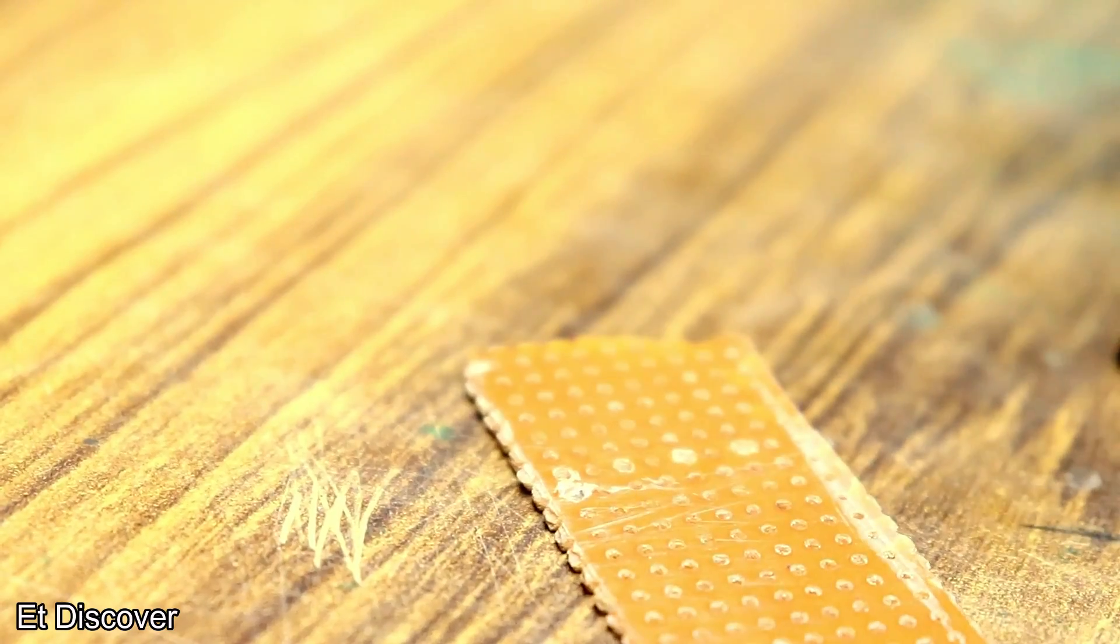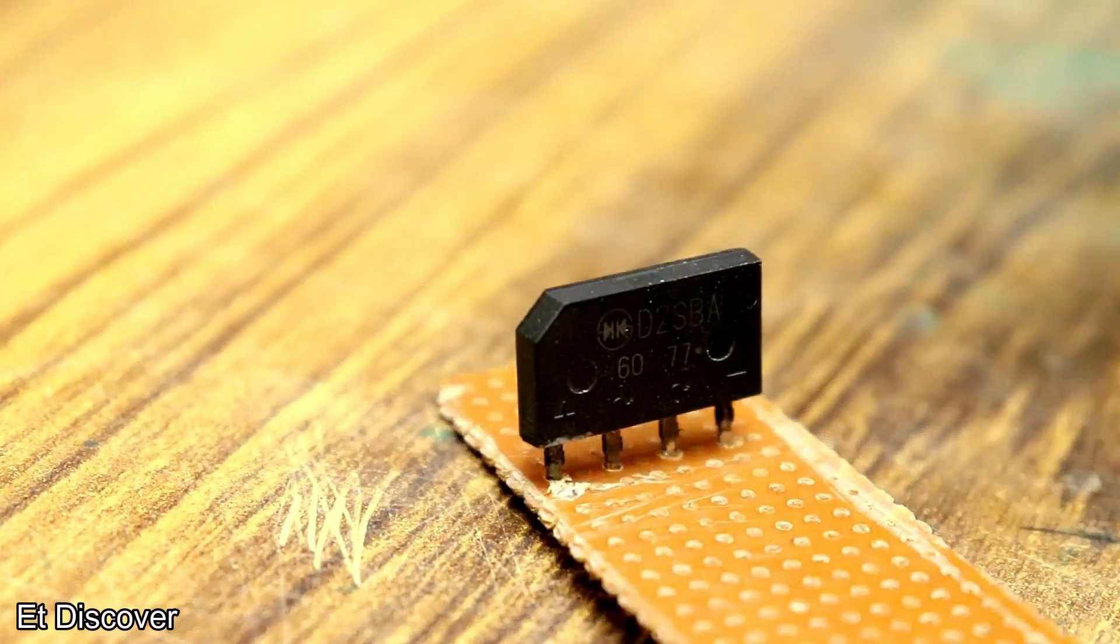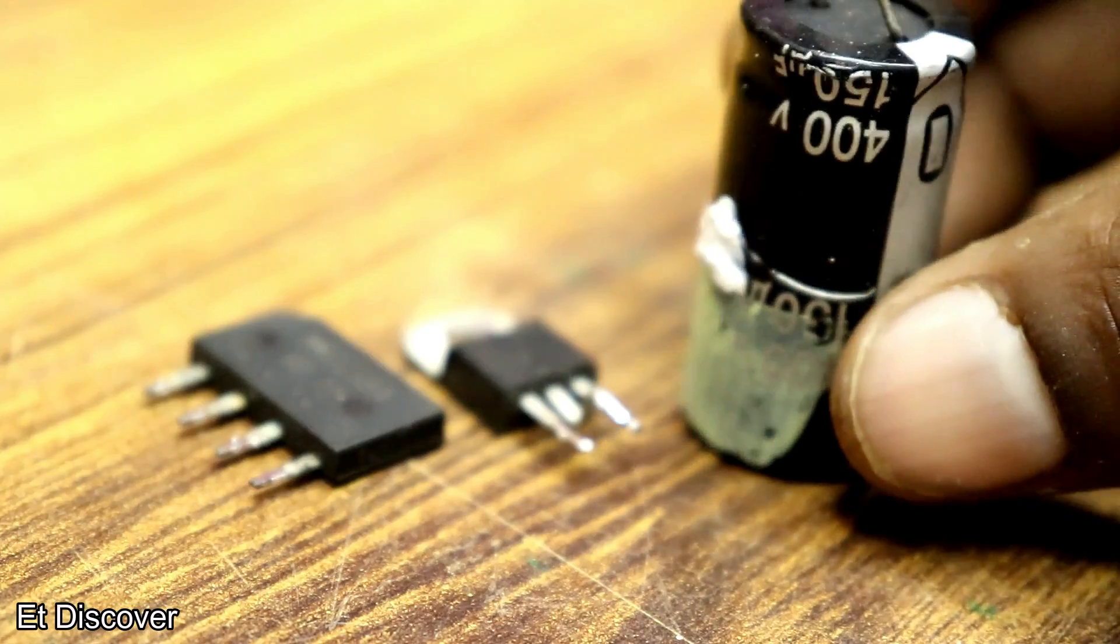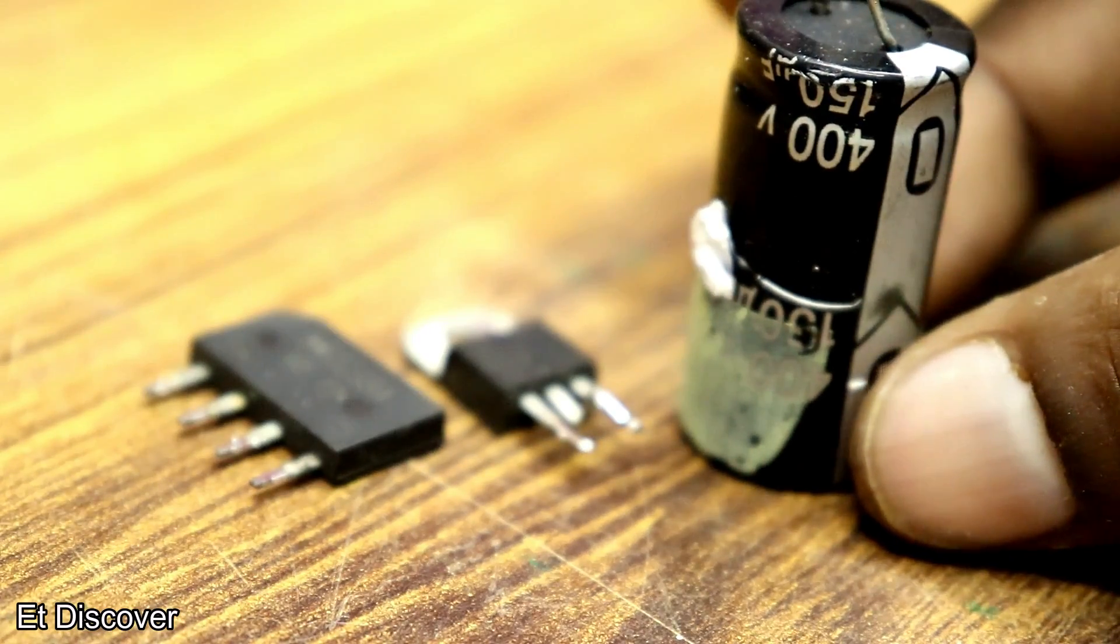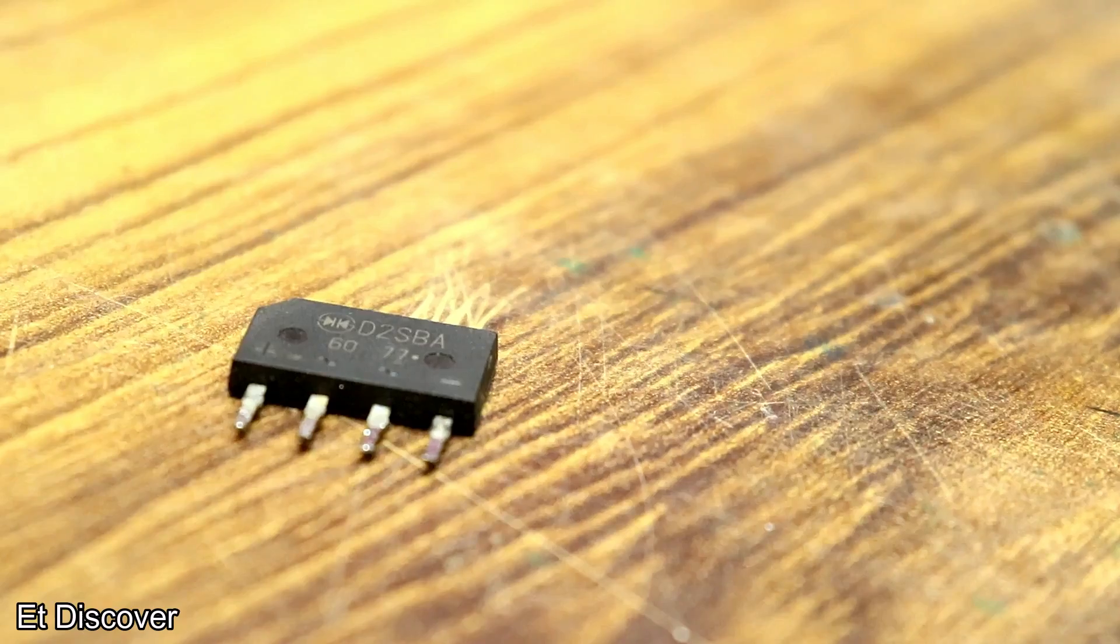From this inverter, you will get 300 volt AC, but I need DC voltage here. So I have used a full bridge rectifier diode to create DC voltage from AC voltage. I used a 150 microfarad 300 volt capacitor here to store the voltage.